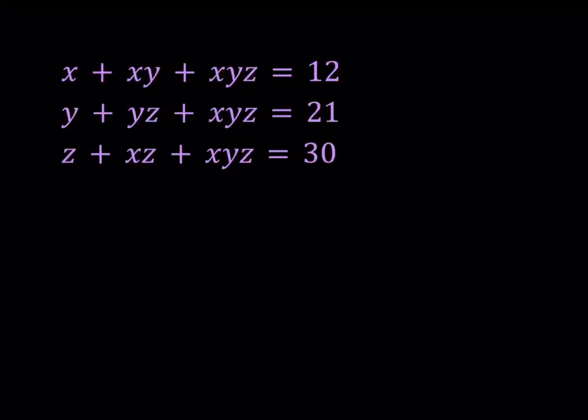Hello everyone. In this video, we're going to be solving a polynomial system. This is a problem by Stanley Rabinovitz. I'll share some links down below. So we have x plus xy plus xyz equals 12, y plus yz plus xyz equals 21, and z plus xz plus xyz equals 30. One of the things that I want you to notice about this problem is that all these equations have the same thing xyz, and other pieces are obviously different.